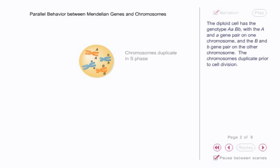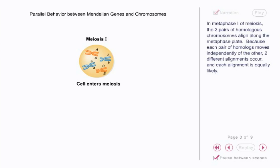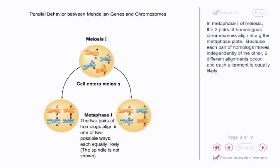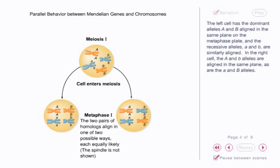The chromosomes duplicate prior to cell division. In metaphase I of meiosis, the two pairs of homologous chromosomes align along the metaphase plate. Because each pair of homologs moves independently of the other, two different alignments occur and each alignment is equally likely. The left cell has the dominant alleles big A and big B aligned in the same plane on the metaphase plate, and the recessive alleles little a and little b are similarly aligned.